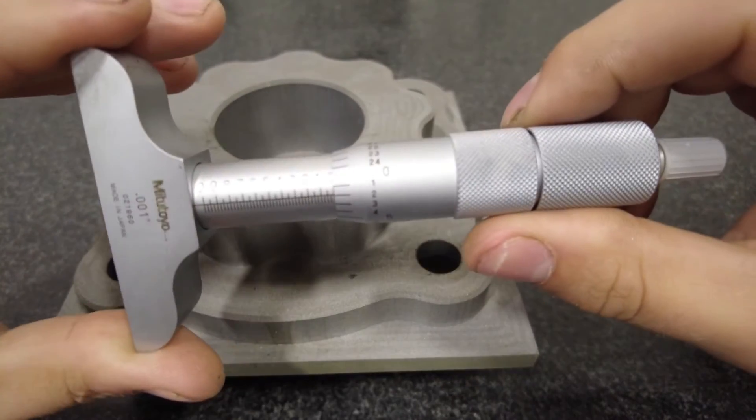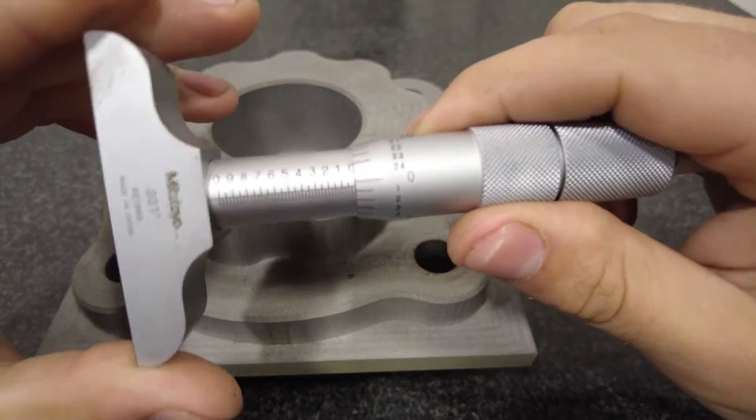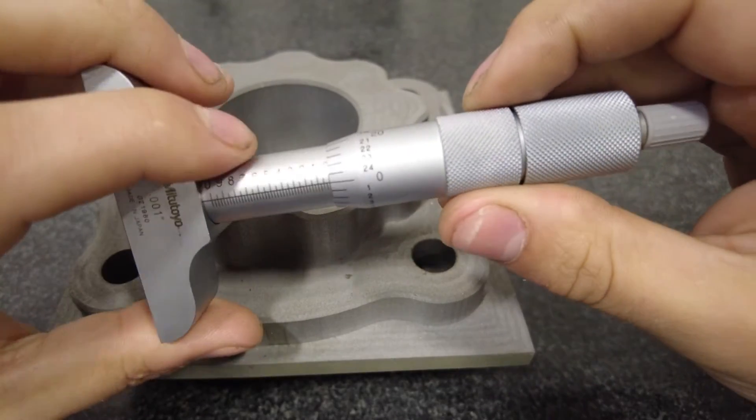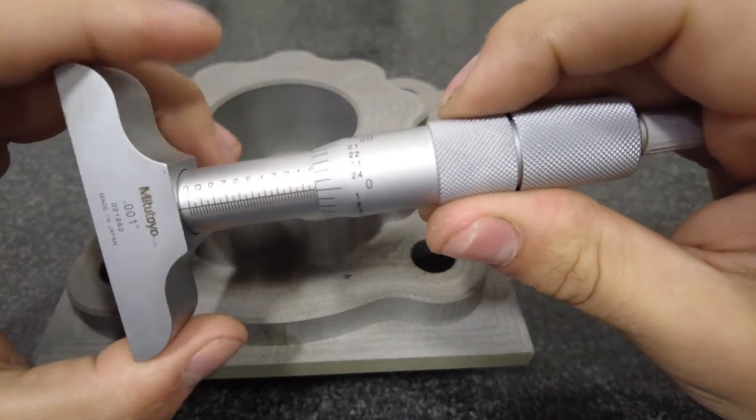In this video you're going to learn how to use and read a depth micrometer. Here you can see your depth micrometer. This is basically going to be backwards of a regular outside micrometer.